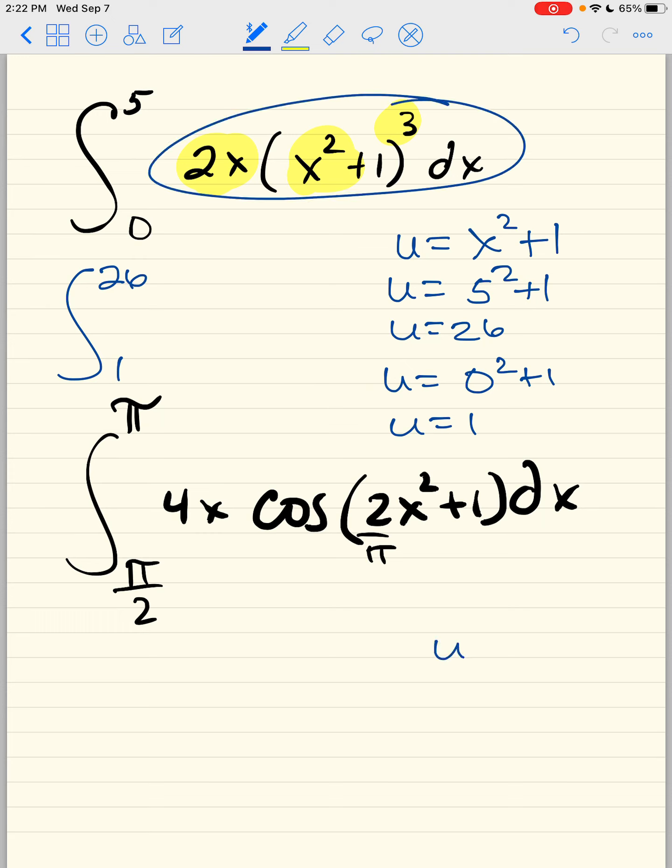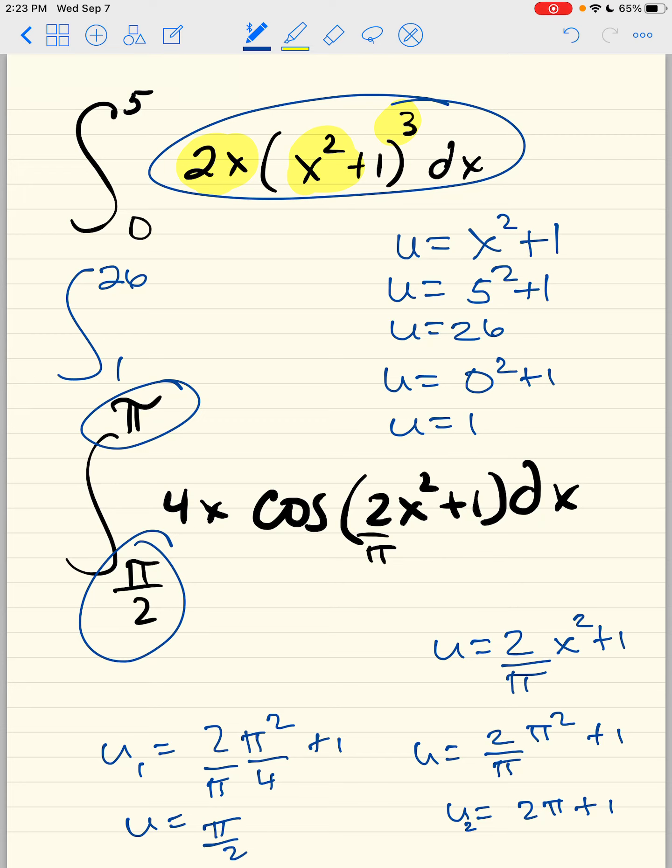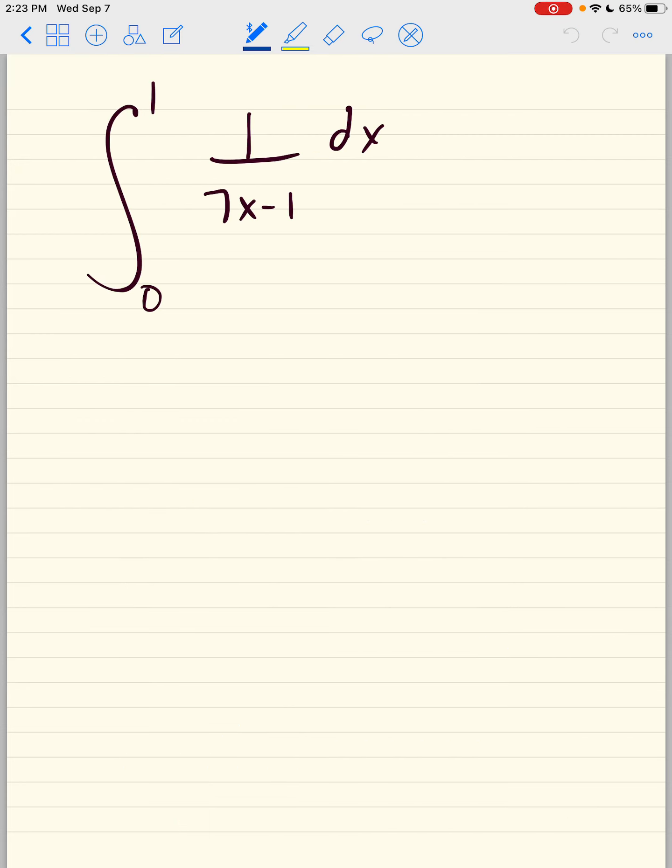This is going to be your u. And you're going to plug in pi. So 2 pi squared over pi plus 1. So this would be just 2 pi plus 1 as your upper bound. And your lower bound would be 2 pi squared over 4 times pi plus 1. And so your lower bound would also be, you can call this like u2, u1. And then that's going to be pi over 2 plus 1. So that's pretty much how you do that.